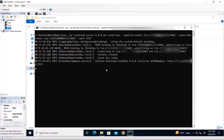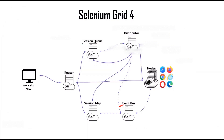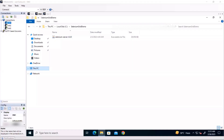The next component to start is the session queue. The session queue is a data storage which stores session requests, and the data is stored in first-in-first-out order. Once requests are placed in the new session queue, it is the responsibility of the distributor to check the session queue to see if there are any pending requests for a new session.